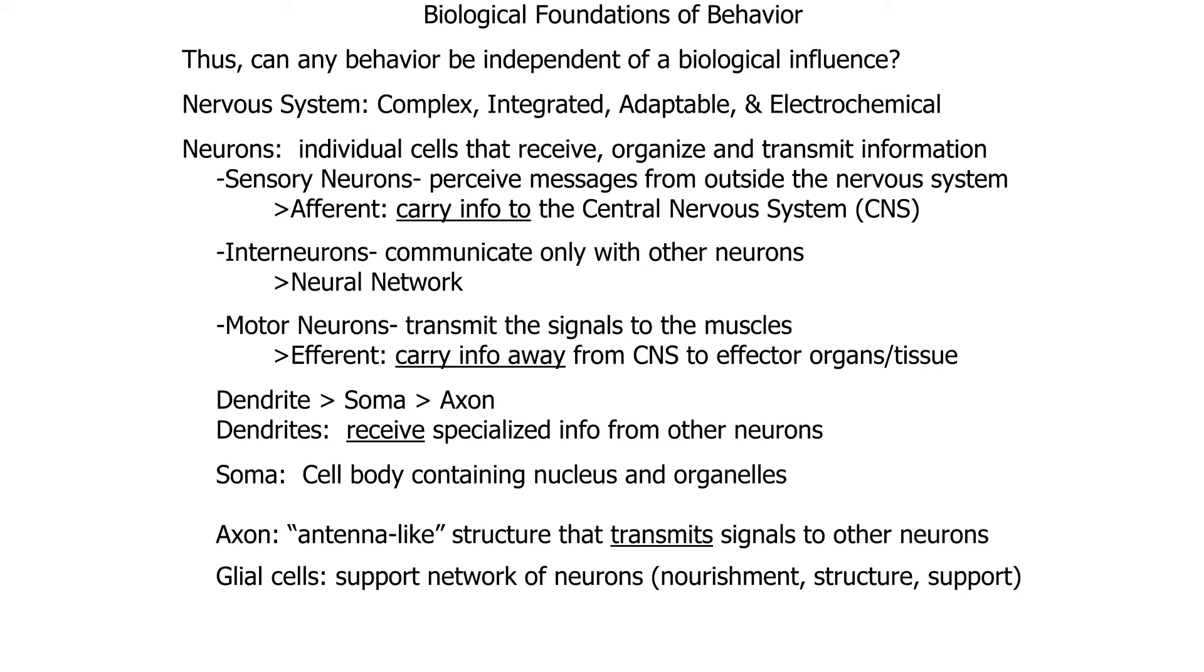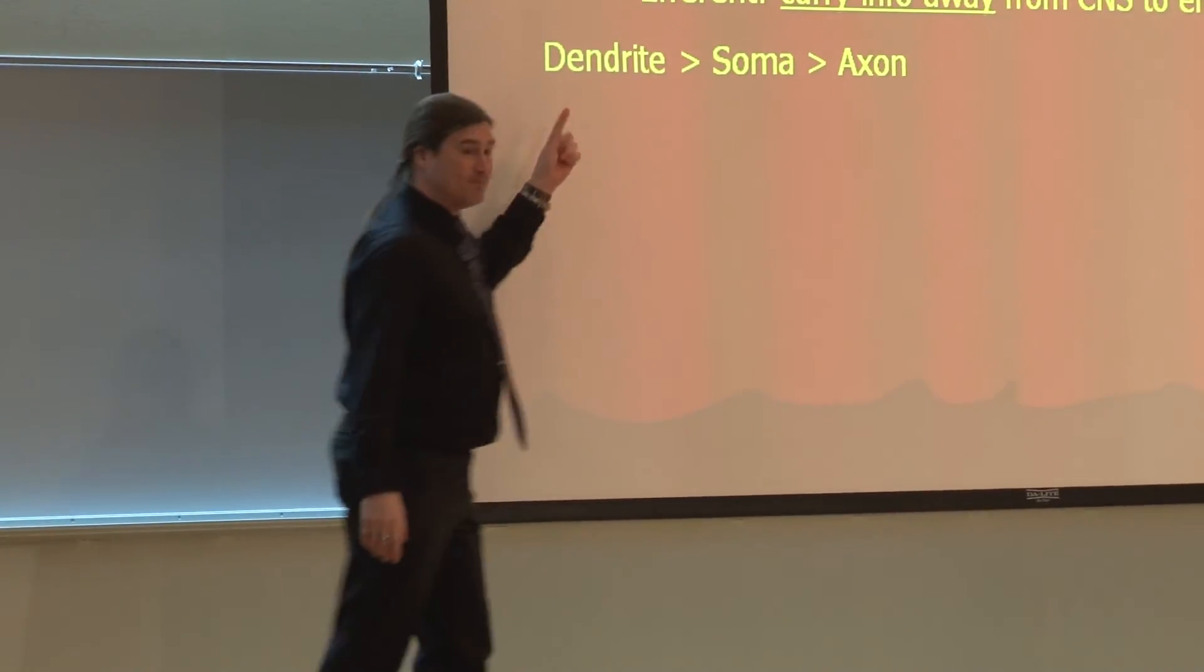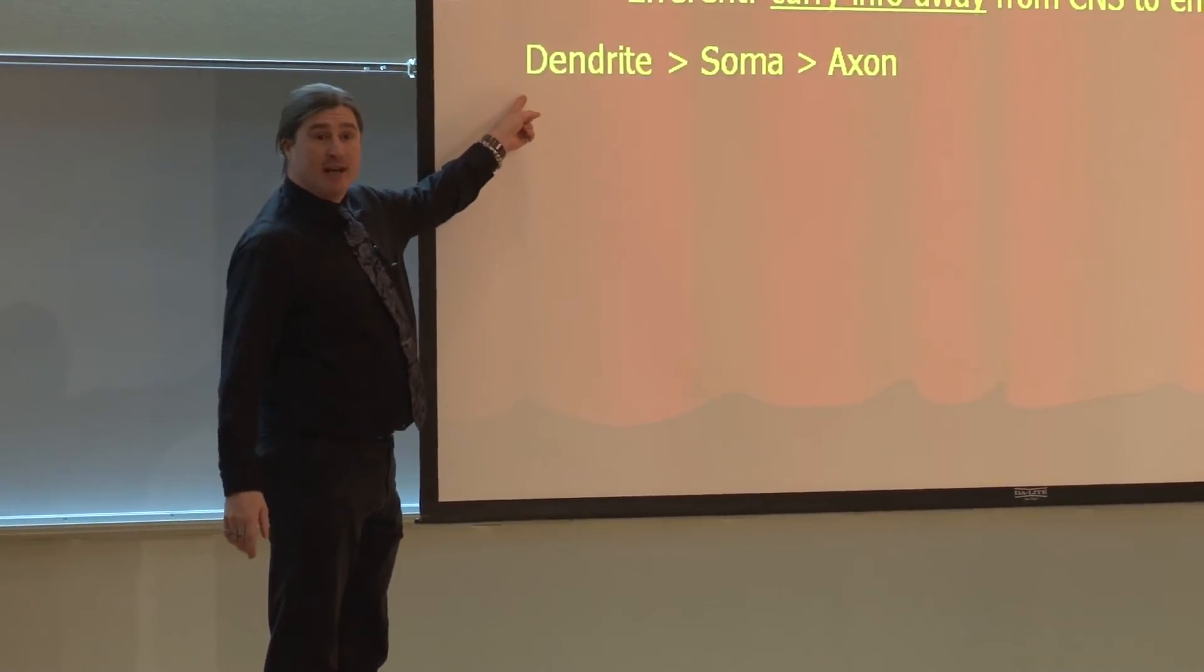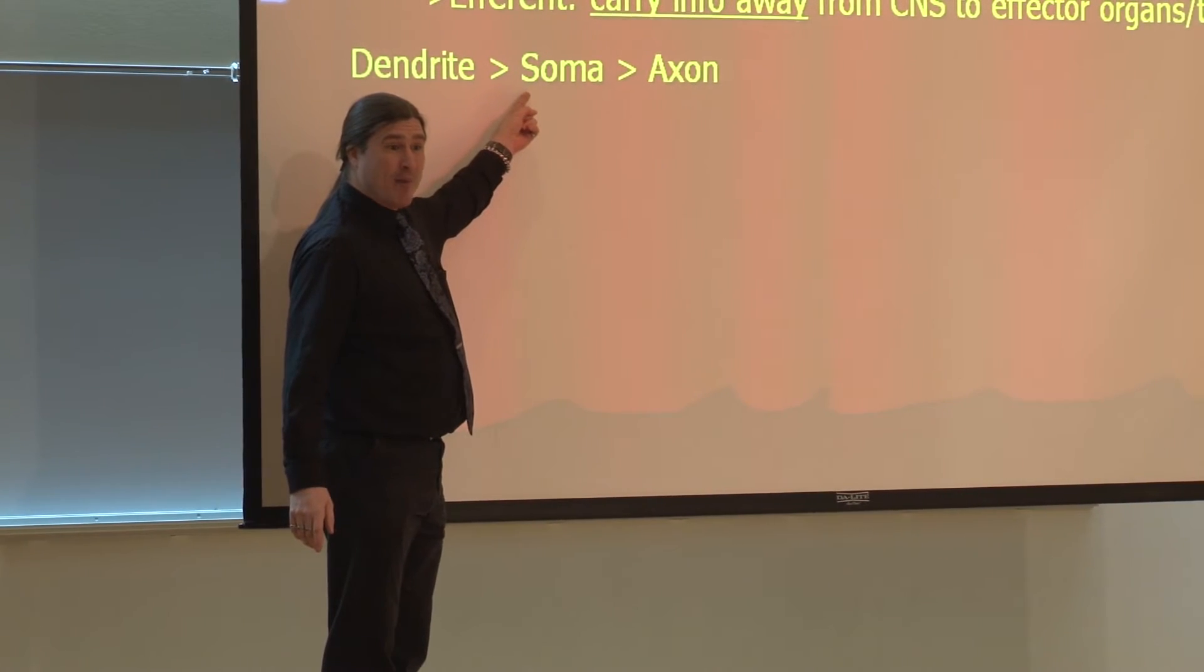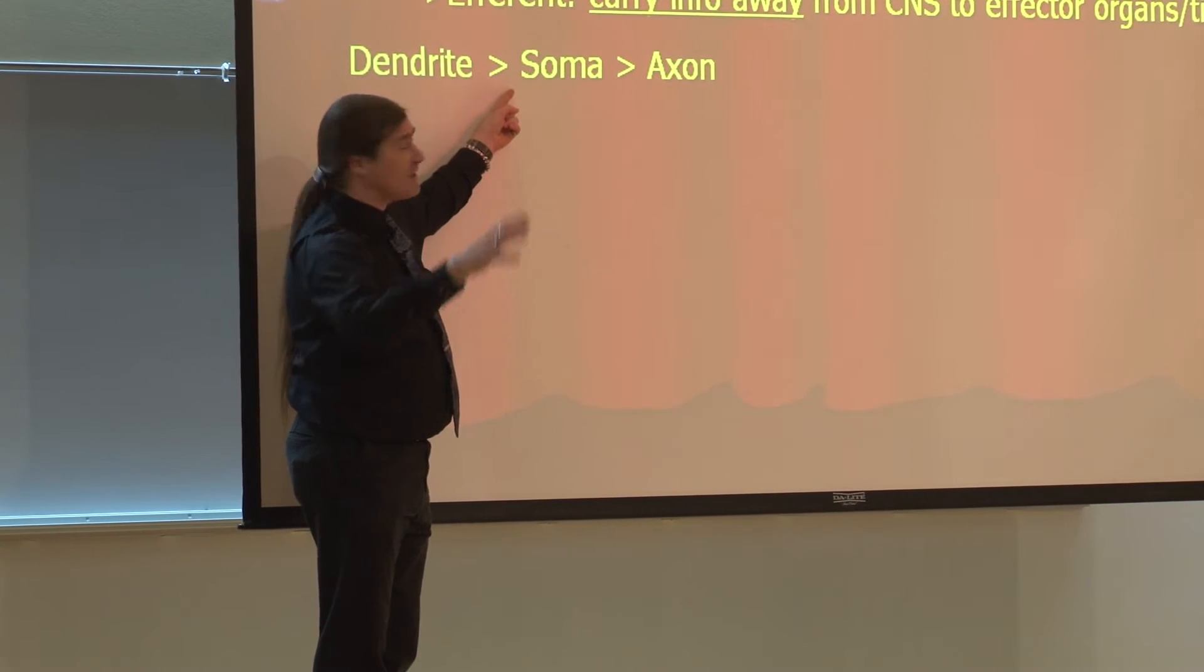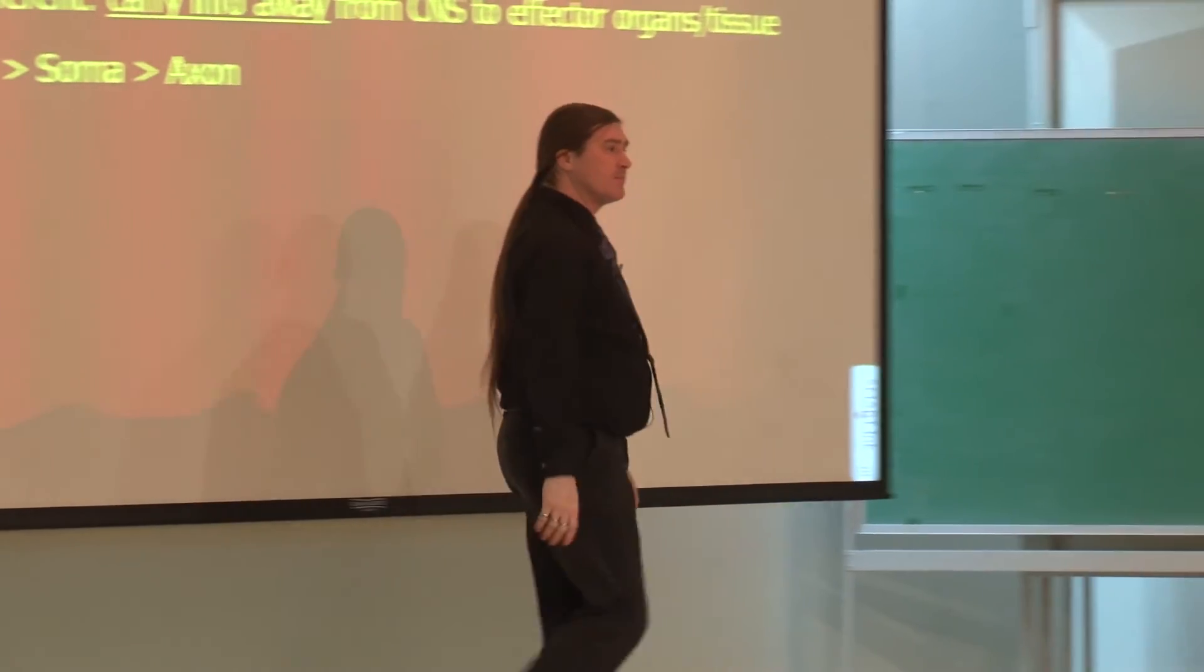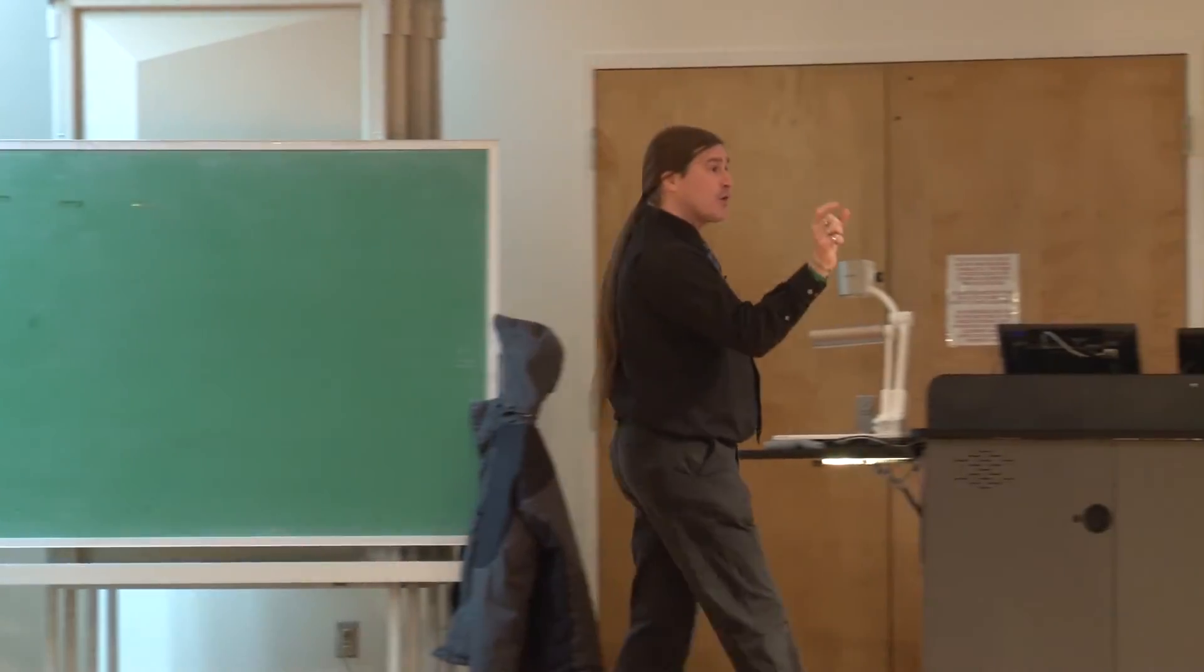Now the transmission of information, and that might even be the question itself, goes across structures of the neuron that we're going to talk about in some detail. They come in through the dendrite, they are summated in the soma, which is your cell body. And if that information is to be passed on, it will go out through the axon.